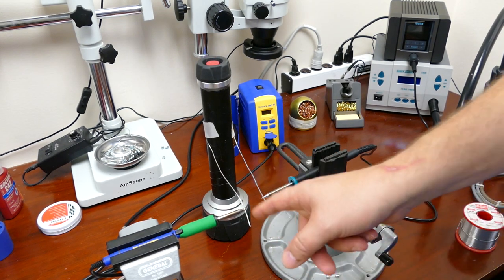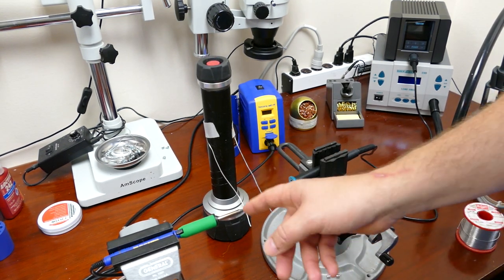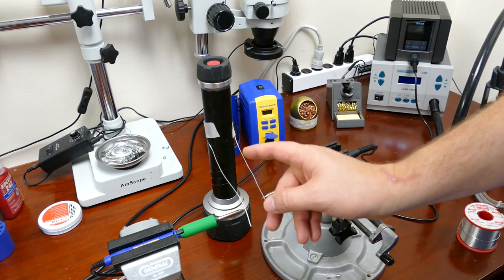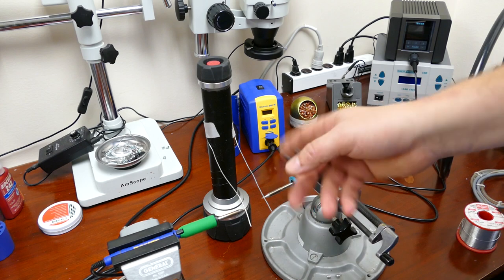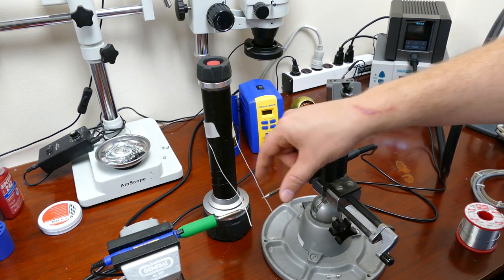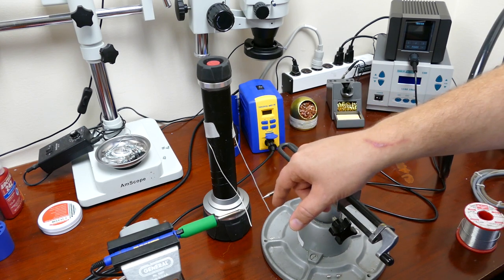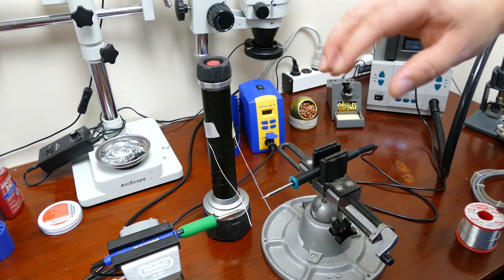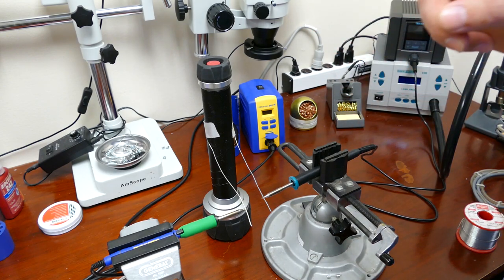In the last test, the iron on the left maybe didn't have good enough contact with the solder, because it didn't melt until I touched it. So I'm going to do this test again. Both irons are cold to the touch, and the solder should be exactly on the hot points of both irons. I'm going to turn them both on, and we're going to see which one melts the solder the fastest again.